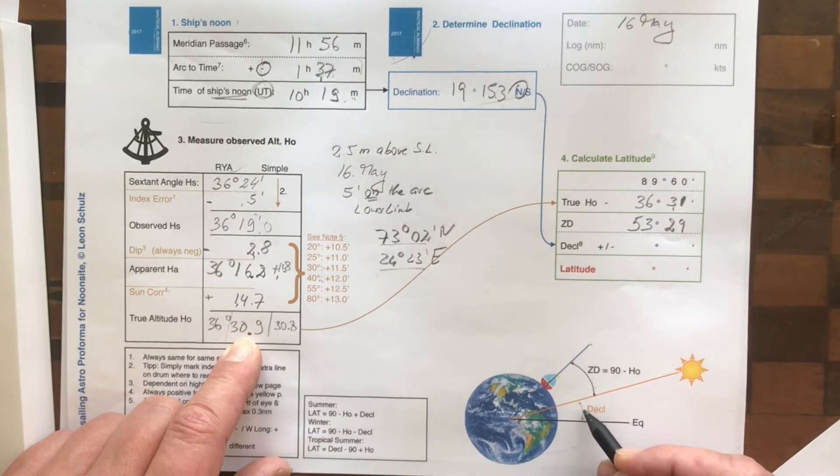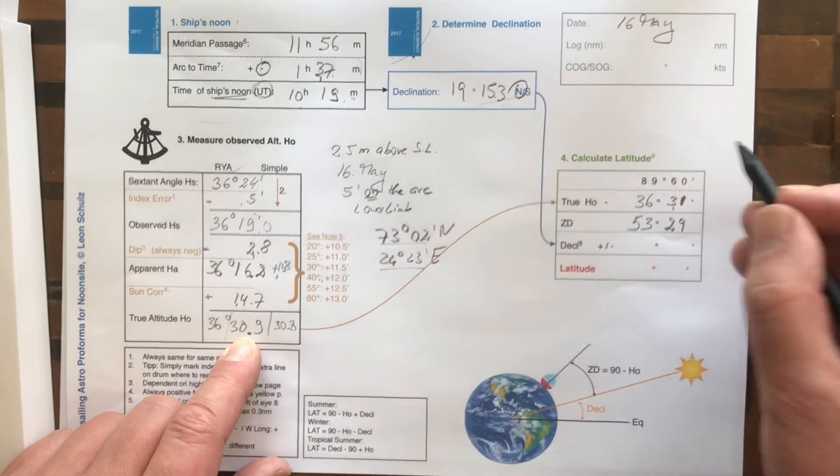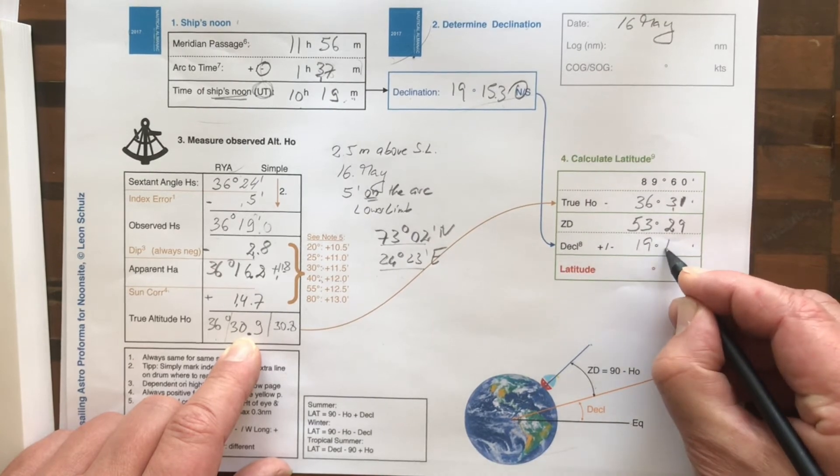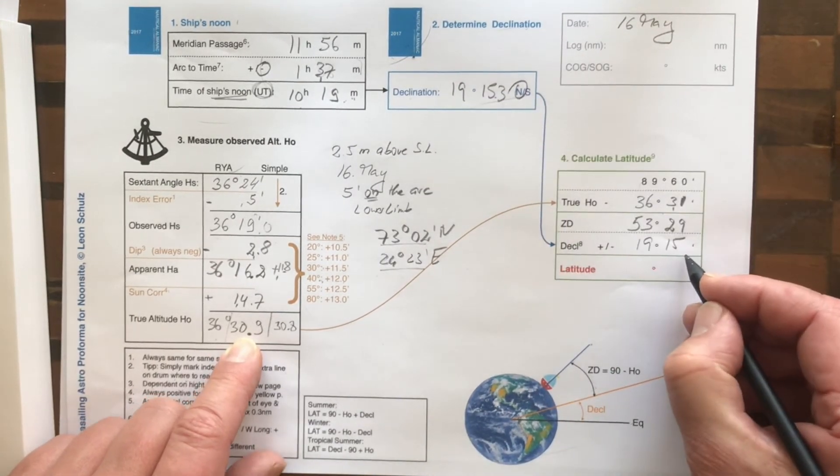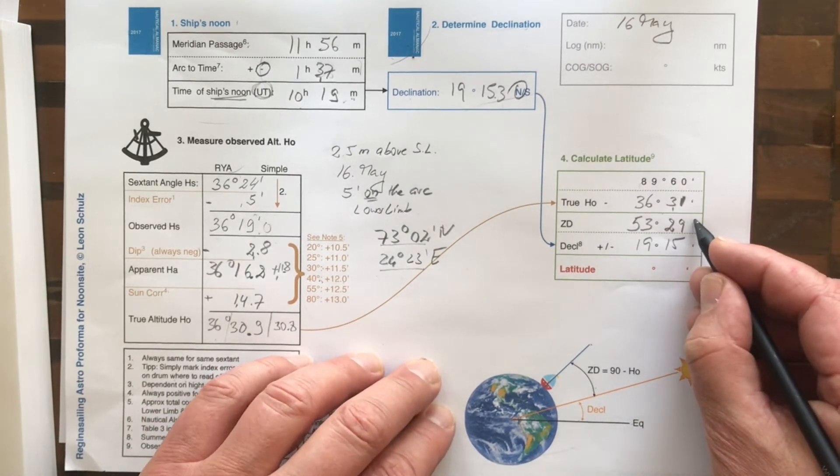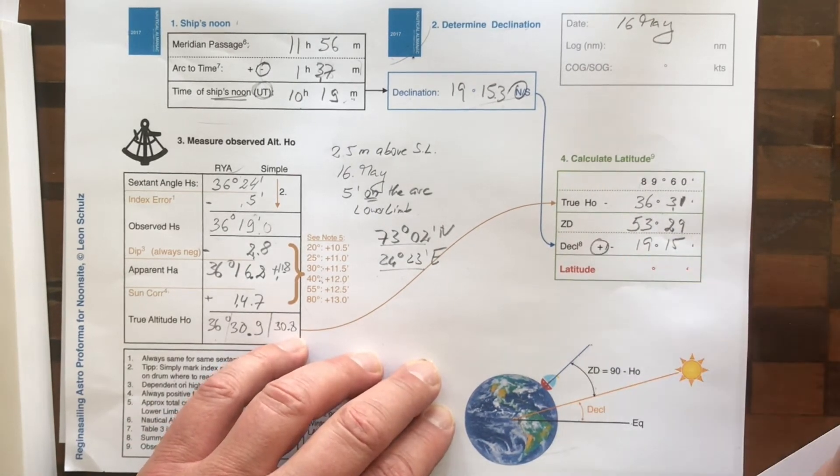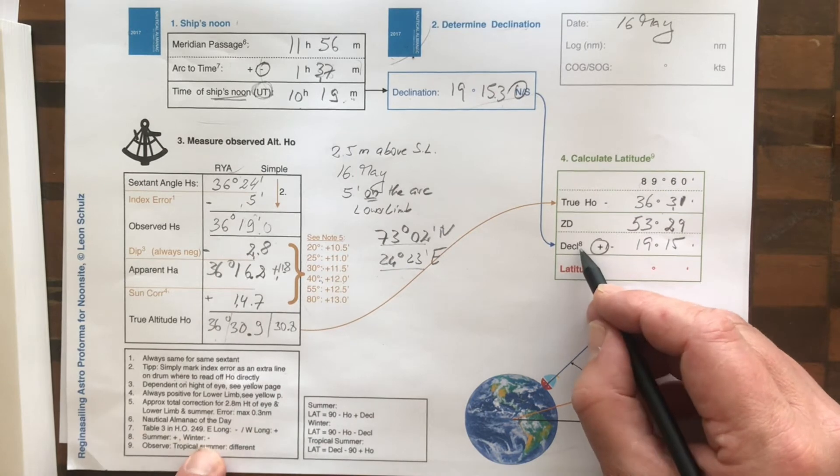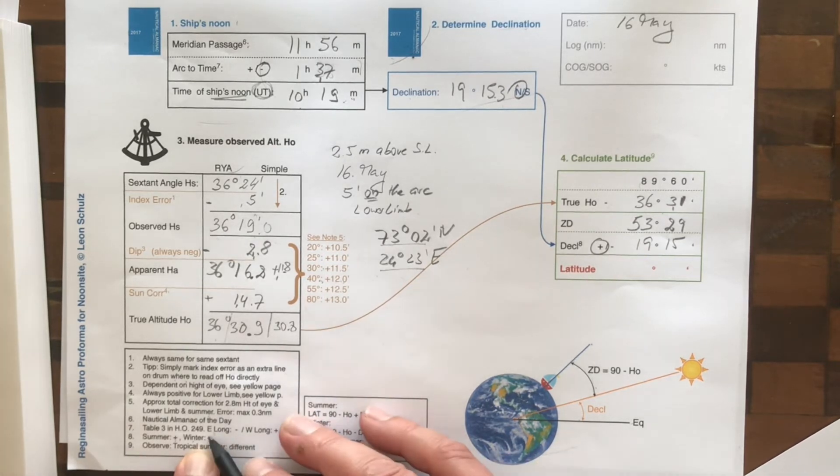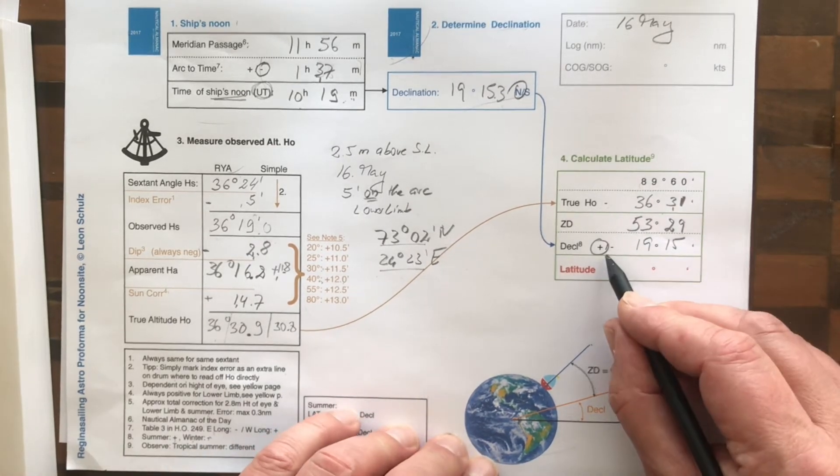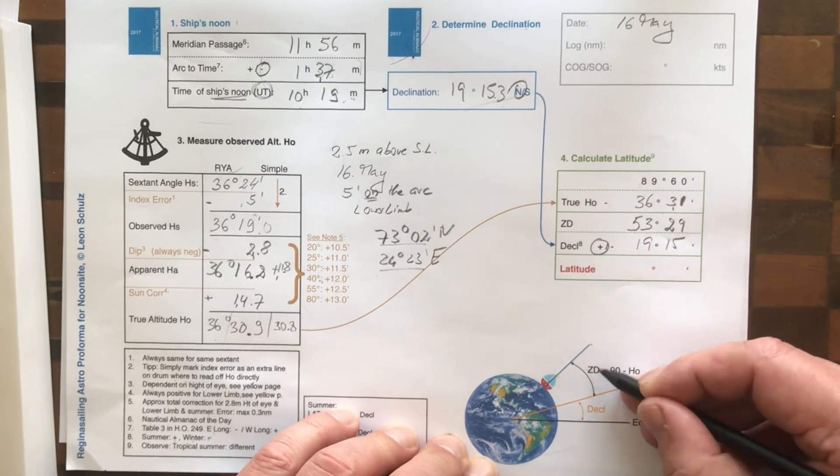Now we have to add the declination. Declination comes from here. 19 degrees. I call it 15 minutes. Never mind these 0.3. So we add these two. We have to add the declination. There's a little mark there. It says summer plus, winter minus. I'll come to that in a second. What that means. So, we have to add these here in summer.